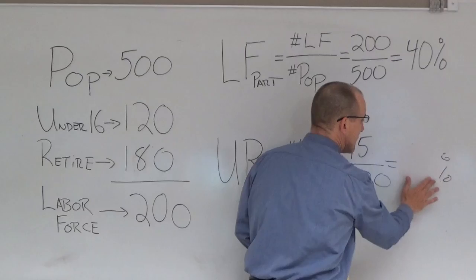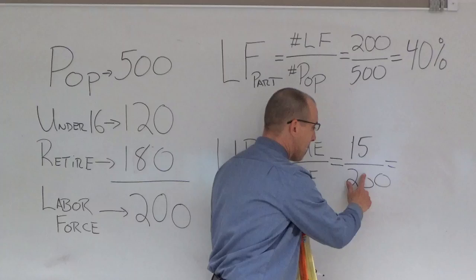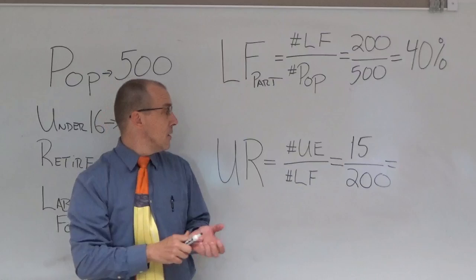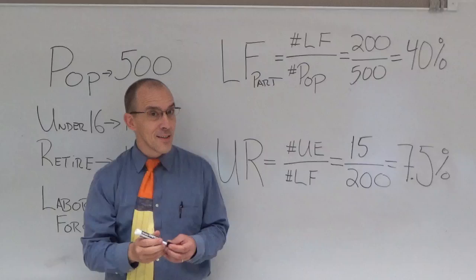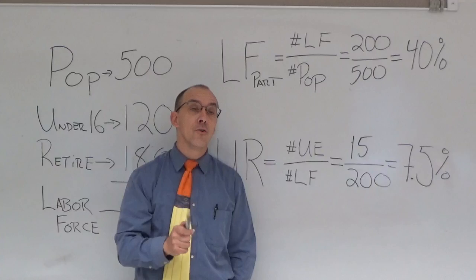However, as we shall see, this has some big impact on the unemployment rate. Previous unemployment rate 6.5 percent. Well now we have a situation where labor force is 200, and in this situation, 15 divided by 200 will give us an unemployment rate of 7.5 percent.